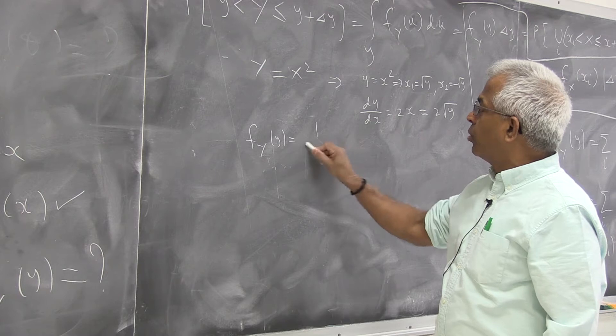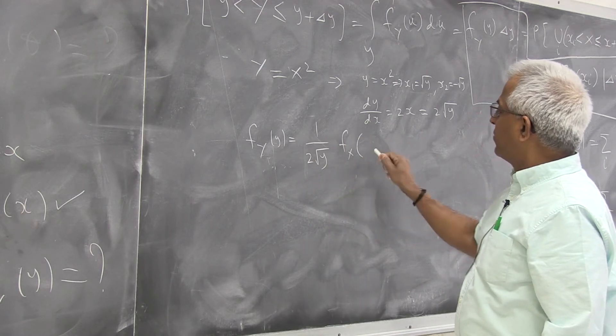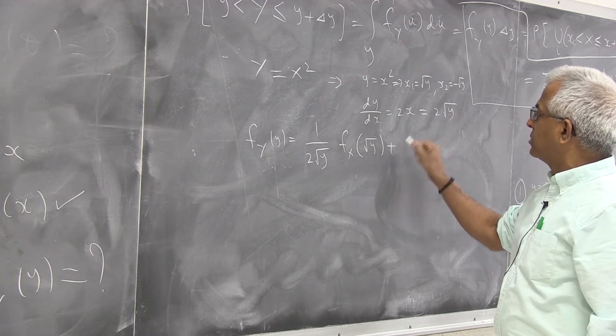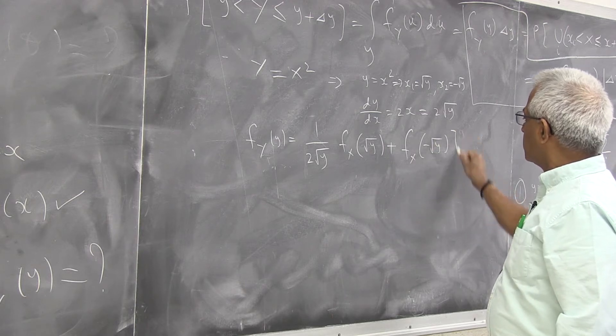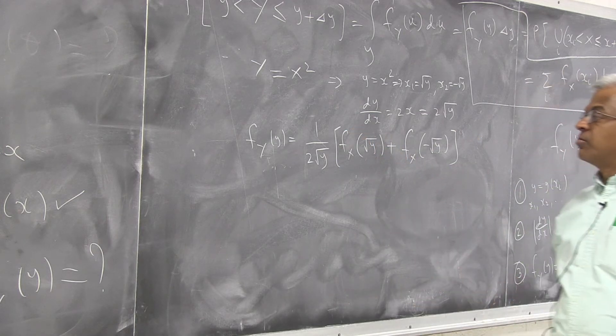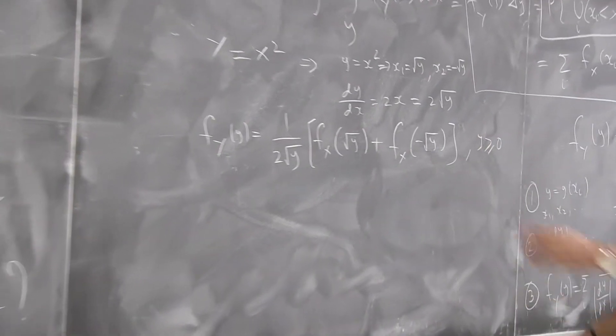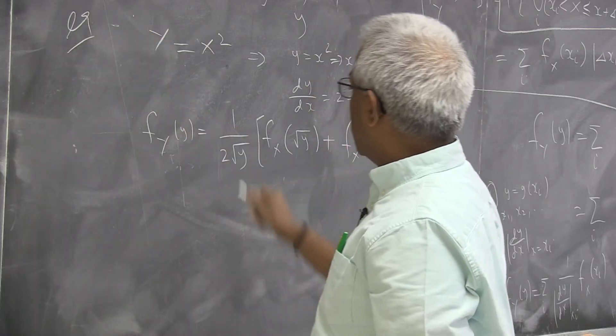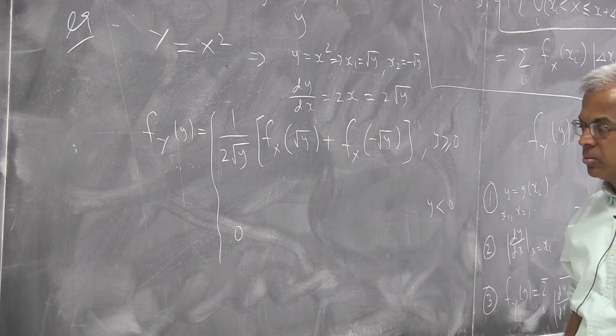So we can quickly write this as f_y(y), the formula. There are two roots, 1 over dy by dx, f_x evaluated at the first root, which is plus the f_x evaluated at the second root. Of course, from this problem, y is always non-negative because y is x squared. And so this is the complete answer, equals 0 otherwise.